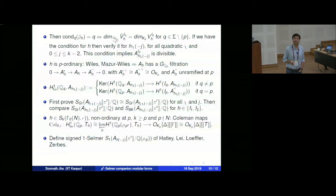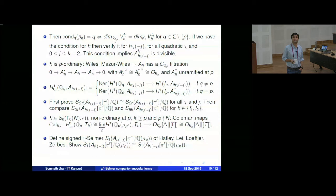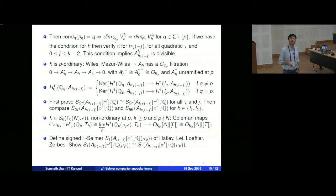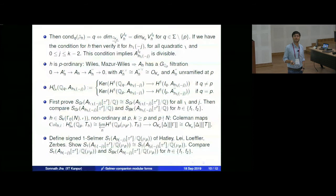Lei-Loeffler-Zerbes define the signed (one and two) Selmer conditions, and there is also work of David Hetley and Antonio Lei. The main idea: you first show that the signed Selmer group of f_1 at π^r is isomorphic to the signed Selmer group of f_2 at π^r. There are technicalities: this cannot be defined unless the good reduction condition is satisfied, so in particular we cannot twist by a quadratic character ramified at p. We therefore go to Q(μ_p) and prove the result there first.